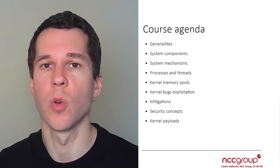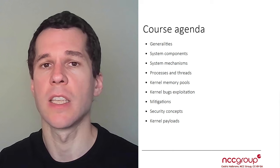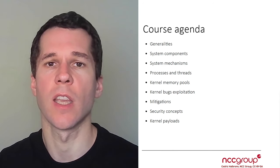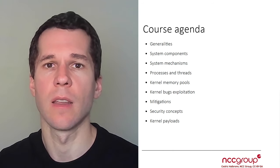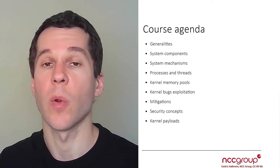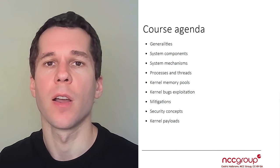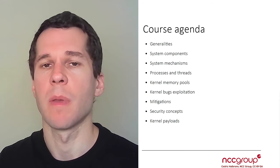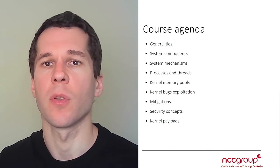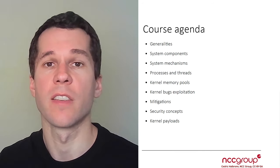Then we are going to look at what we call kernel pools, which is basically the heap implementation in the Windows kernel, and we're going to see what the different kernel pools implemented in the kernel are. Then we are going to look at different bugs that you can find, such as memory corruption vulnerabilities like use-after-free, type confusion bugs, overflows, or race conditions.